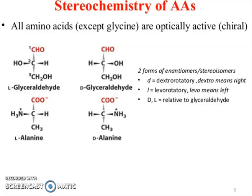All amino acids except glycine are optically active. You can see here L-glyceraldehyde and D-glyceraldehyde, and L-alanine and D-alanine — two forms called enantiomers, or stereoisomers. Dextrorotatory means right, levorotatory means left. The D and L designation is relative to glyceraldehyde.